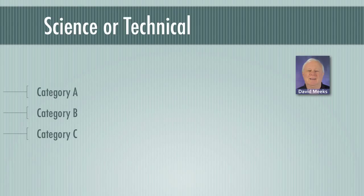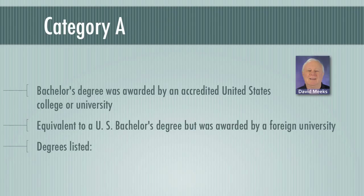The second qualifying area is your science or technical background. There are three categories that you can apply under: A, B, and C. Category A is where you have a bachelor's degree awarded by an accredited U.S. college or university, or an equivalent bachelor's degree awarded by a foreign university.